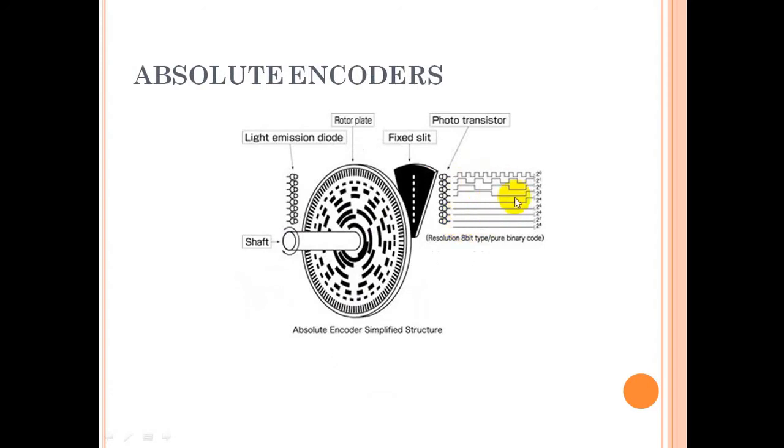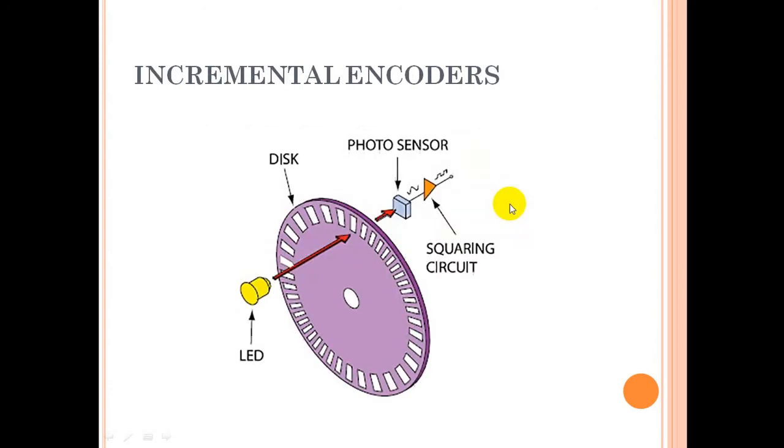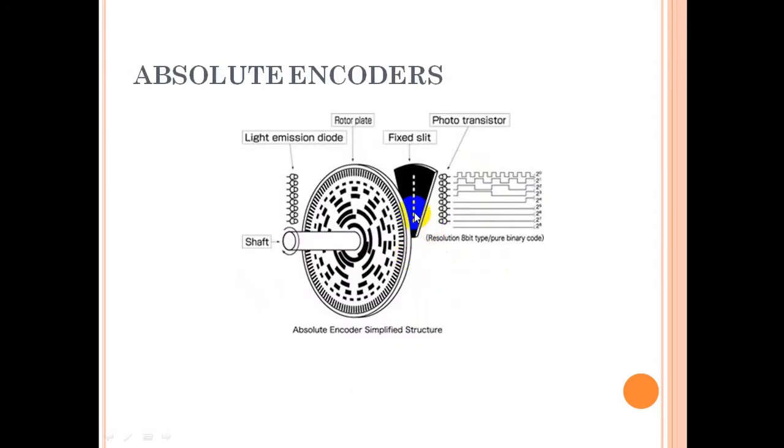For absolute encoders, unlike incremental encoders, absolute encoders have one additional part: a fixed plate. You can see LED emitting diodes and a receiver photo receiver—an optical receiver. This arrangement is different from the incremental encoder.